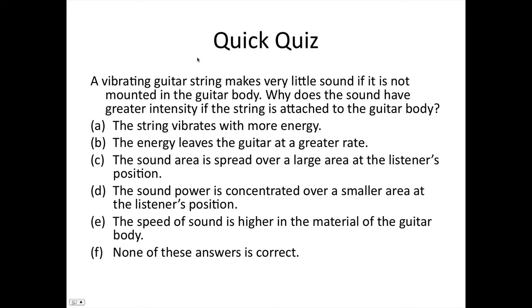OK, quick quiz. This is quite difficult. A vibrating guitar string makes very little sound if it is not mounted in the guitar body. Why does the sound have greater intensity if the string is attached to the guitar body? A, the string vibrates with more energy. B, the energy leaves the guitar at a greater rate. C, the sound area is spread over a large area at the listener's position. D, the sound area is concentrated over a smaller area at the listener's position. E, the speed of sound is higher in the material of the guitar body. Or F, none of these is correct.